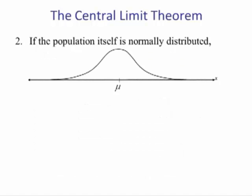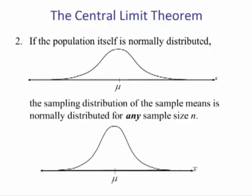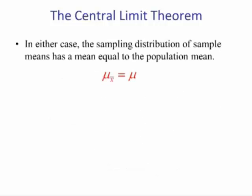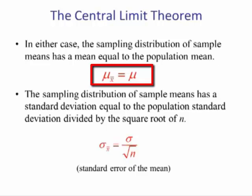If the population itself is normally distributed, then the sampling distribution of the sample means is normally distributed for any sample size n. In either case, the sampling distribution of the sample means has a mean equal to the population mean, and a standard deviation equal to the population standard deviation divided by the square root of n. This is called the standard error.